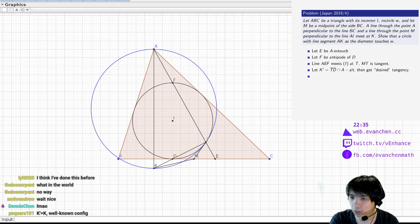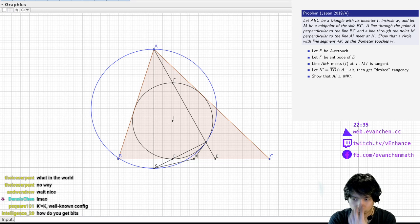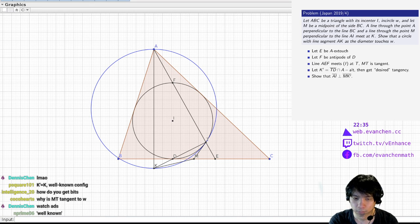So all I need to do is show that AI is perpendicular to MK prime. Okay. I want something about that point there.